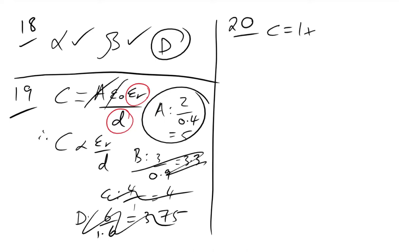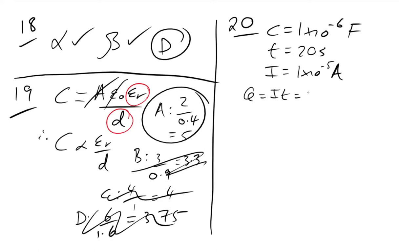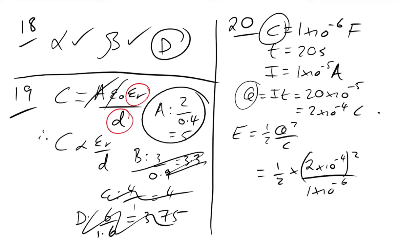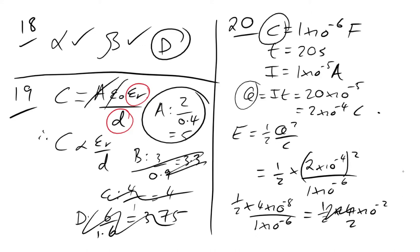Question 20: capacitance = 1×10⁻⁶ F, time = 20 s, current = 10 μA = 1×10⁻⁵ A. Charge Q = I×t = 20×10⁻⁵ = 2×10⁻⁴ C. Energy = Q²/(2C) = (1/2) × (2×10⁻⁴)² / (1×10⁻⁶) = (1/2) × 4×10⁻⁸ / 10⁻⁶ = (1/2) × 4×10⁻² = 2×10⁻² J. The answer is C.